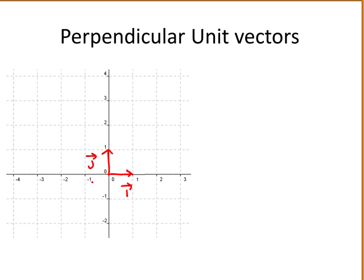The perpendicular unit vectors i and j are special vectors because they form a basis. All other vectors in the two-dimensional space can be represented as a linear combination of i and j.